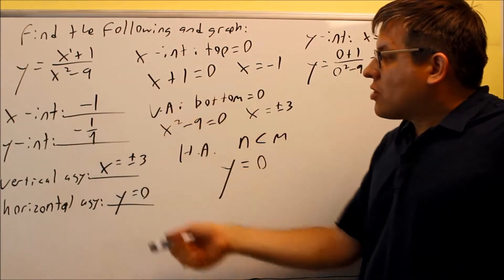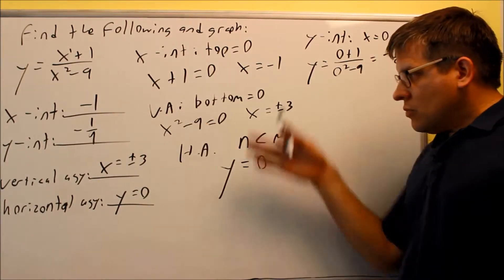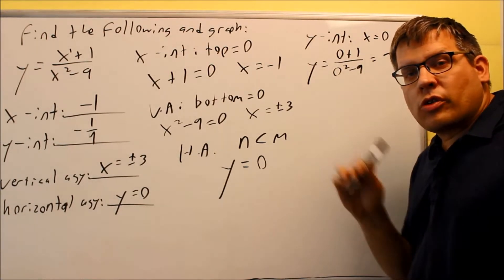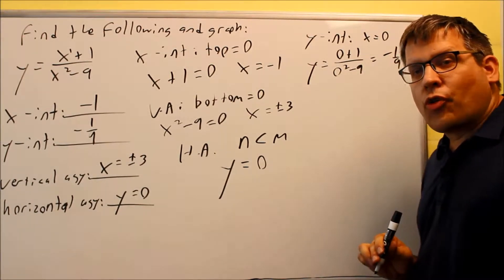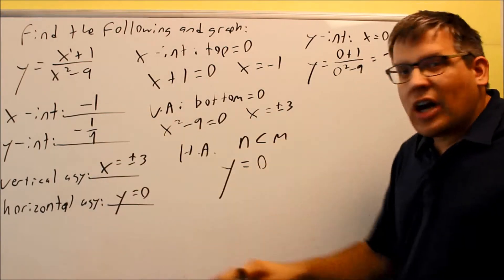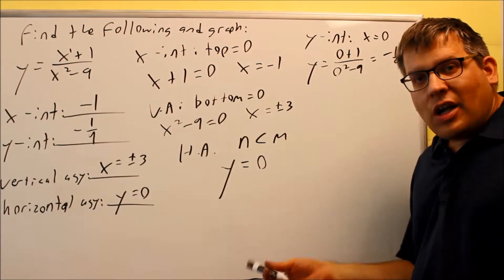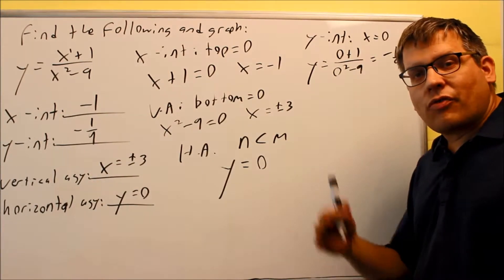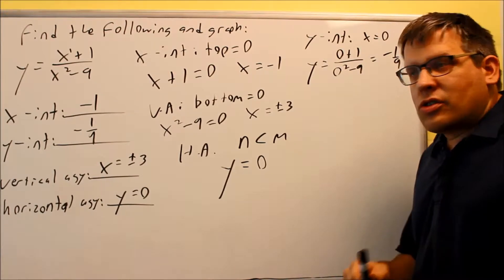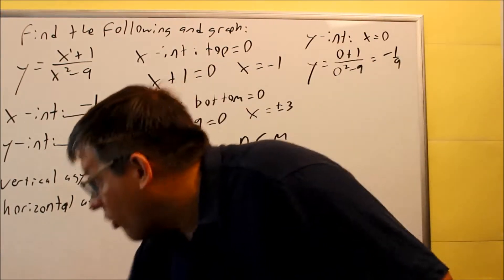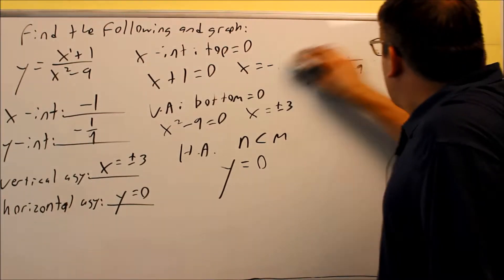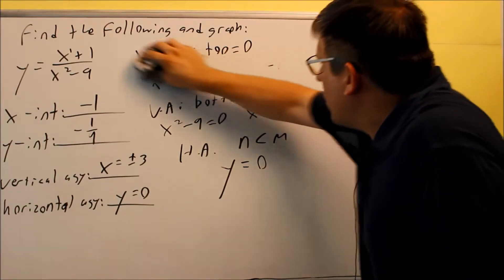This preliminary information — the intercepts and asymptotes — is always what you want to find first before graphing. It gives us an idea of how the graph is set up. From there, we just need to find a couple more details. I'm going to erase this and move on to the graph.